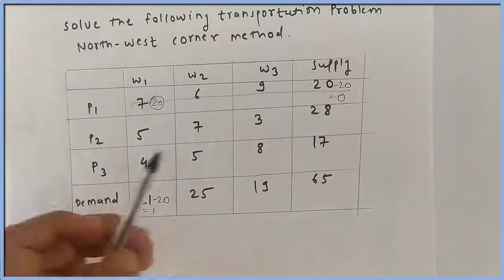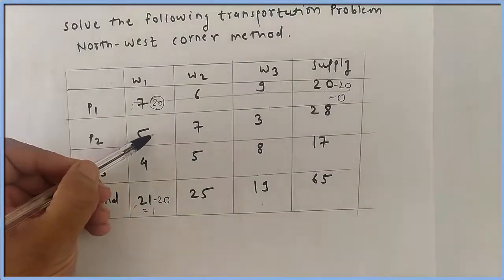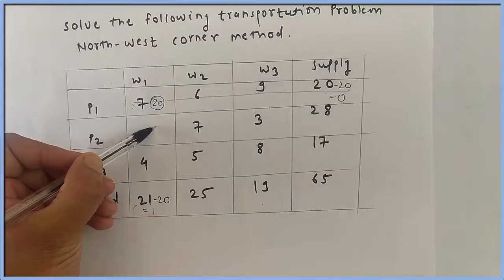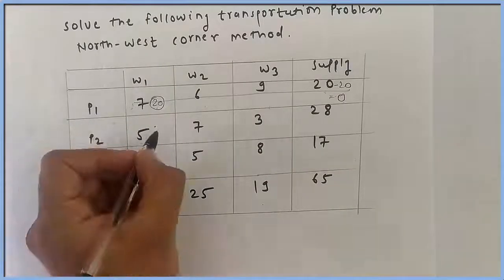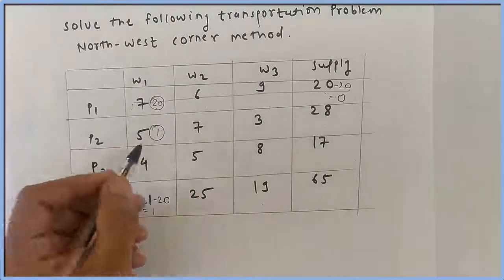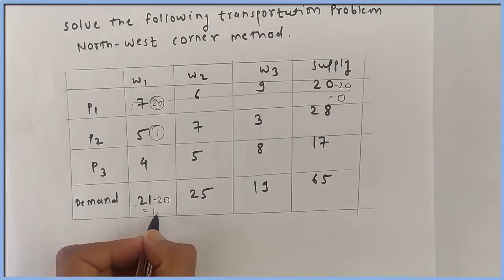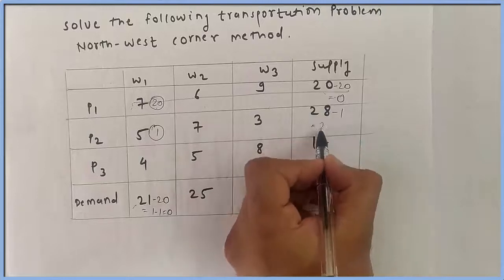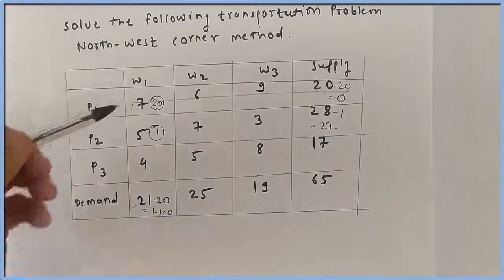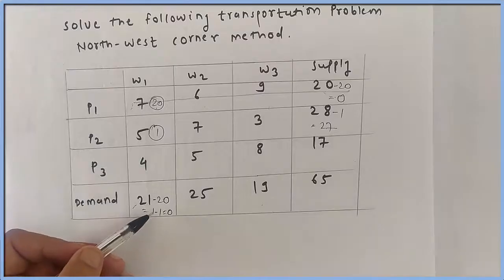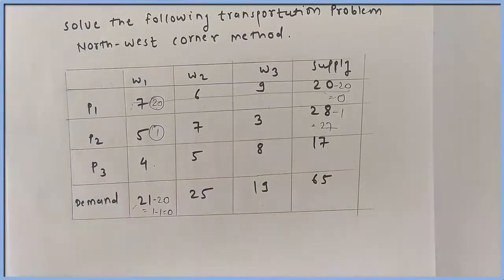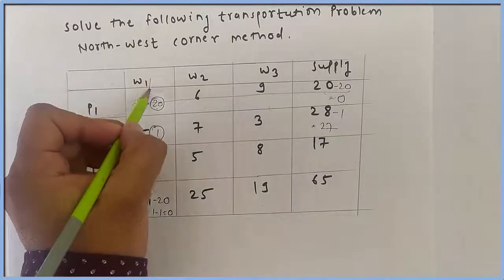Now look at the remaining rows and columns. The Northwest corner is this cell, where supply is 28 and demand is 1. We allocate the lesser unit, which is 1. After this allocation, demand becomes 1 minus 1 equals 0, and supply becomes 28 minus 1 equals 27. The W1 column demand is now 0, so we cannot allocate any unit to this column and we cancel it.